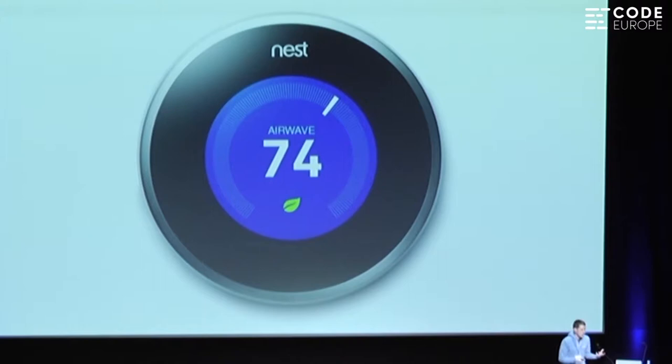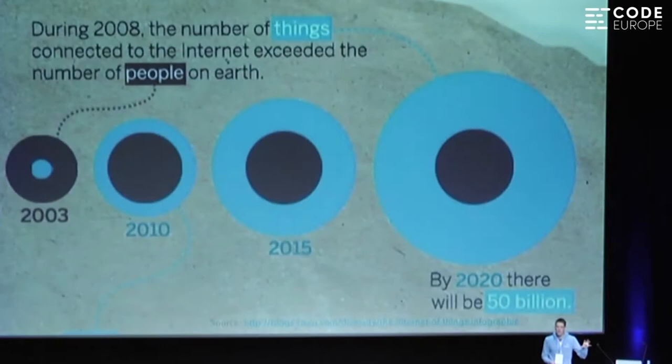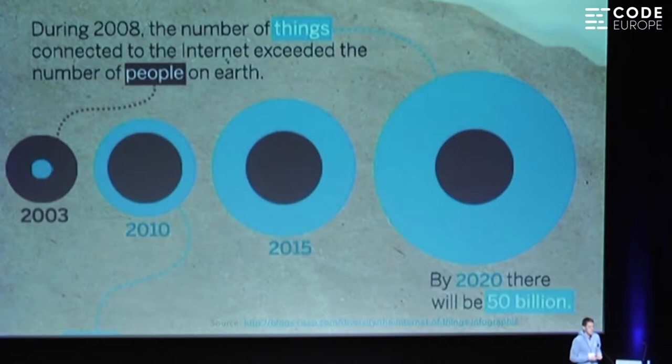This is an example of IoT in the home — a major revolution for what had previously been a very dumb, simple, mechanical device. Now it's got its own embedded Linux system with machine learning. IoT has exploded over the past 10 years. In 2008 we passed the threshold where the number of devices connected to the internet exceeded the number of people. It's estimated by 2020 there will be 50 billion of these devices online — that's seven for every person in the world.